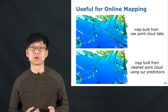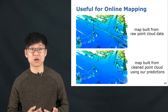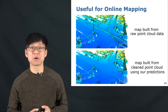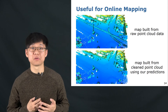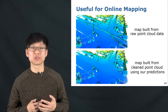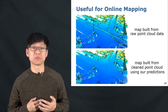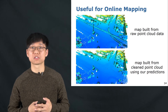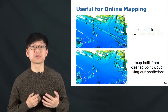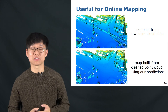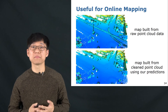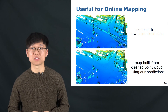The proposed moving object segmentation is also useful for online mapping. In the upper part, I show the map built from the raw point cloud data. As can be seen, there are ghost artifacts caused by moving objects, which pollute the map for later use. Using our methods to clean the LiDAR scans, the artifacts are gone and we can obtain a clean map without changing the mapping system.